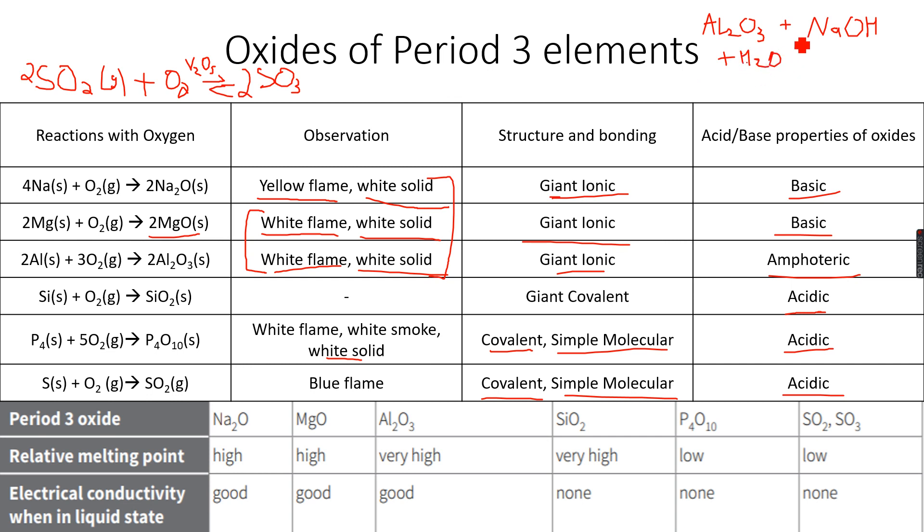This is Al2O3 plus 2 NaOH plus 3 H2O giving us 2 NaAl(OH)4. This is a very complex compound. In the previous case, Al2O3 was acting as a base. In this case, Al2O3 is acting as an acid. So this is the acidic and basic properties of Al2O3.